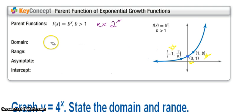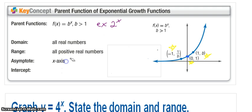My domain for growths is always going to be all real numbers. For my parent function, I am all positive real numbers. If I shift up or down, that will move accordingly.